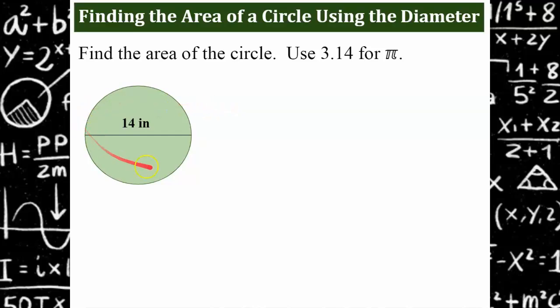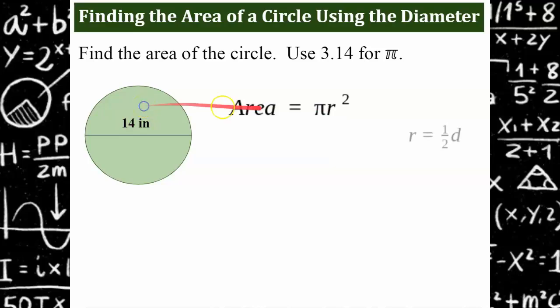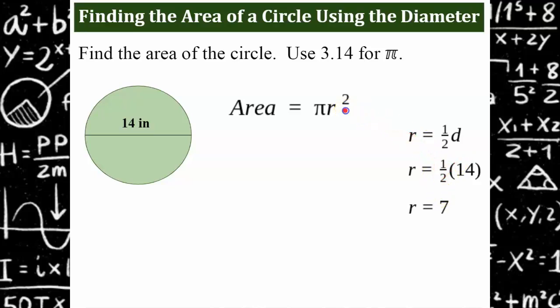Let's try another one. This time we have the diameter of our circle. Unlike circumference, you only have one formula for area. In order to use this formula, we need to know the radius. The radius is equal to half of the diameter. Since the diameter is 14, the radius here is 7. Now we're ready to go back to our area formula and put 3.14 for pi and 7 for the radius.